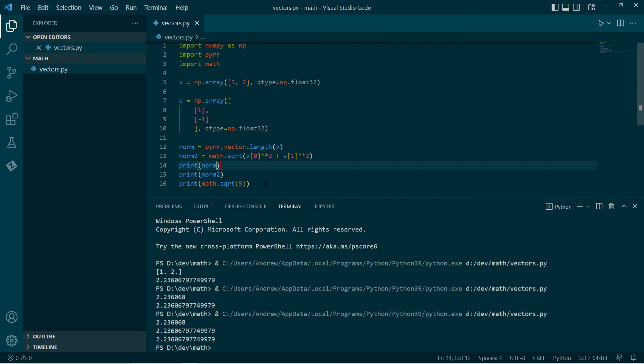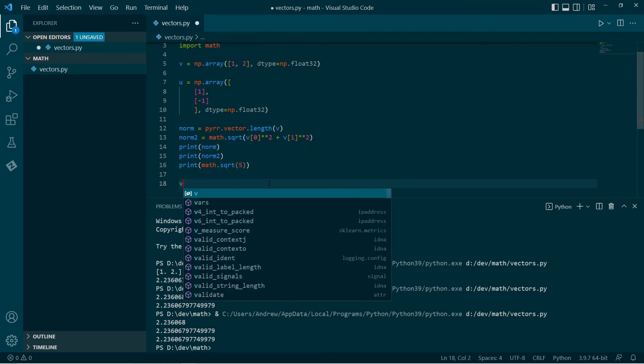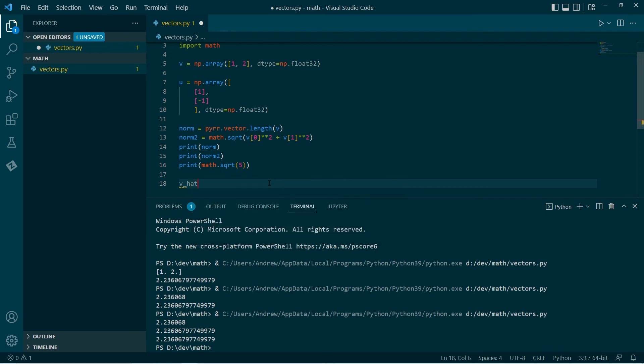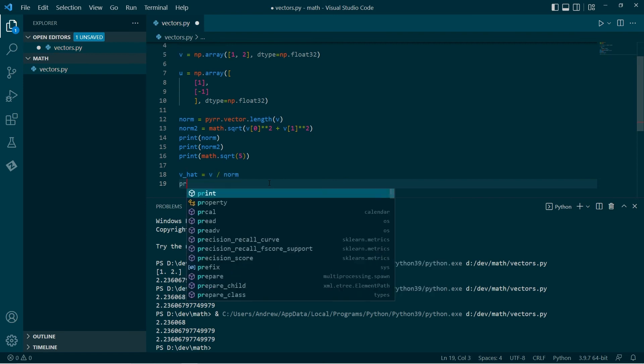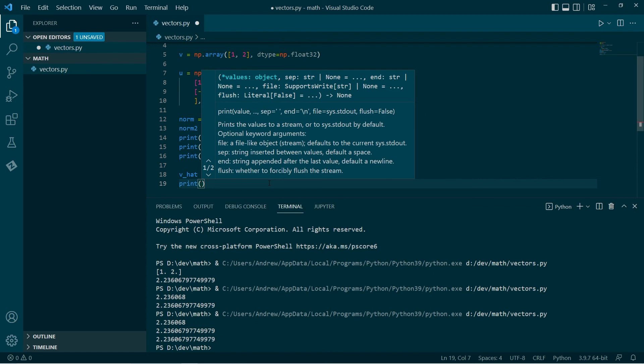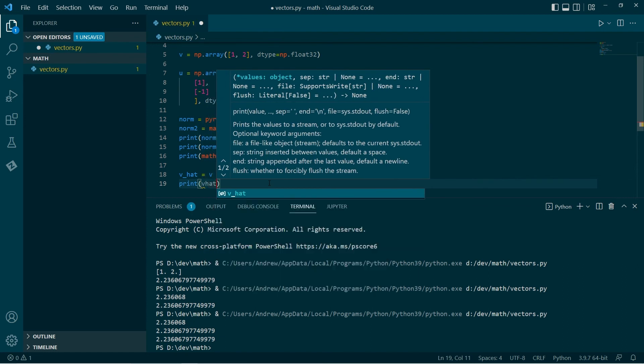So the other thing, right, we've got that, is let's normalize this. So we'll say v hat is v divided by the norm. We'll print that out.